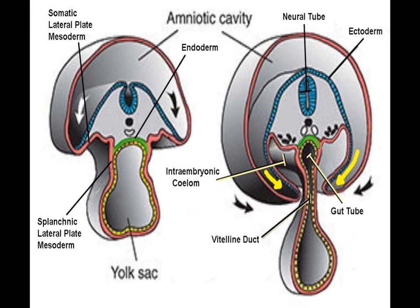Here we have the amniotic cavity. It will form lateral folds on each side, which will then migrate downwards on each side. On the right of the picture, we have the vitelline duct, which will then become obliterated. The lateral foldings will then fuse together, closing off the gut tube. The only opening left to the gut tube will be the umbilical cord below the vitelline duct.